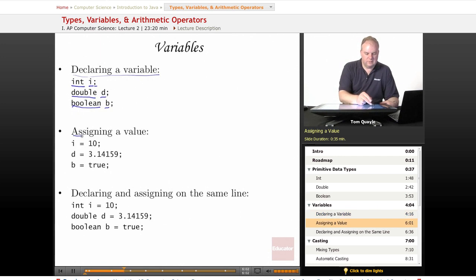We assign a value to a variable by putting the name of the variable and then one equal sign and then the value that we want to assign it to. And we must assign it a value that is consistent with the type of the variable.